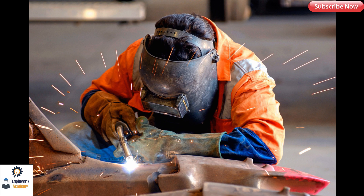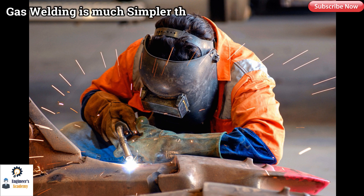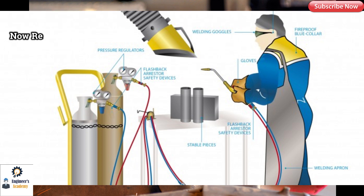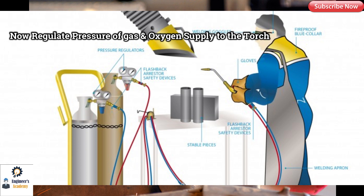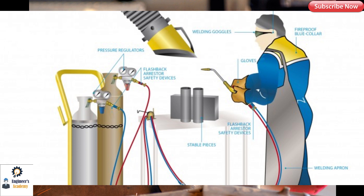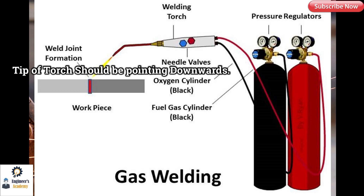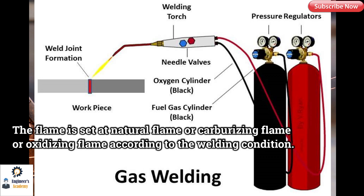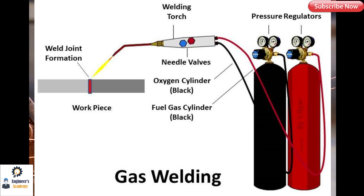Gas welding is quite simpler compared to arc welding. All the equipment are connected carefully — the gas cylinder and oxygen cylinder are connected to the welding torch through pressure regulators. The regulated pressure of gas and oxygen is supplied to the torch where they are properly mixed. The flame is ignited by a striker; take care that the tip of the torch is pointing downward. The flame is controlled through valves in the welding torch and set at neutral, carburizing, or oxidizing flame according to the welding condition. The torch is then moved along the line where the joint is to be created, melting the interface and joining them permanently.